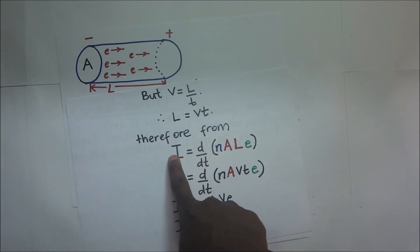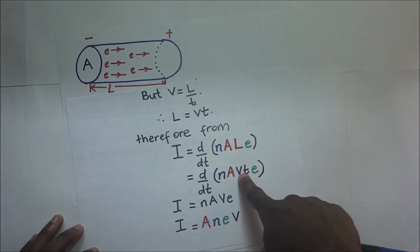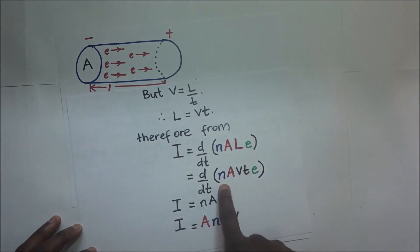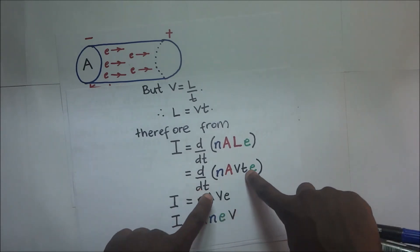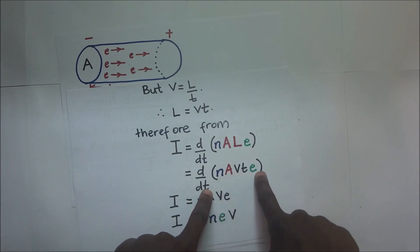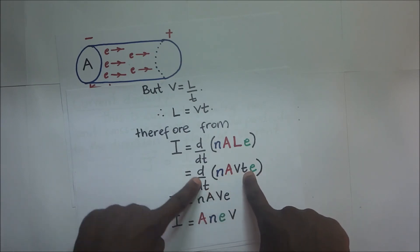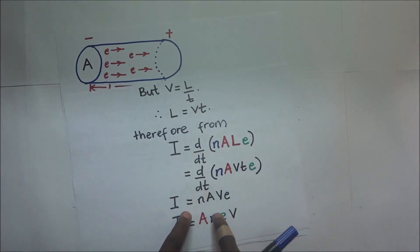So since I equals this expression, where there is L, we put Vt. And so when we differentiate this with respect to t, we shall find that the t is going to disappear since the N, A, V, and E are all constants. So when we differentiate this expression with respect to t, the t disappears and we shall end up with I being equal to NAVE.